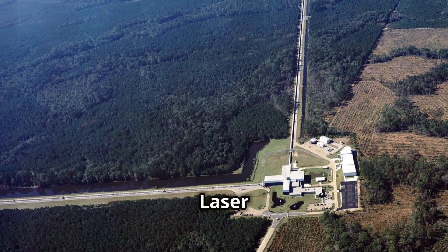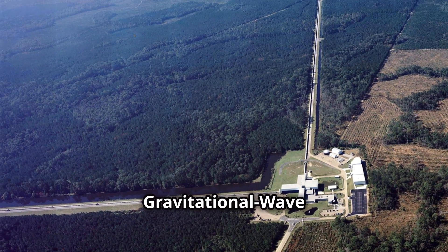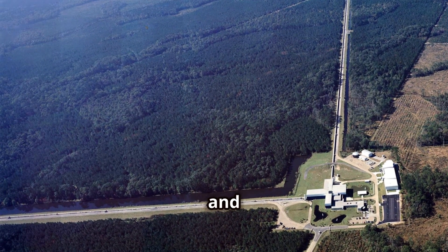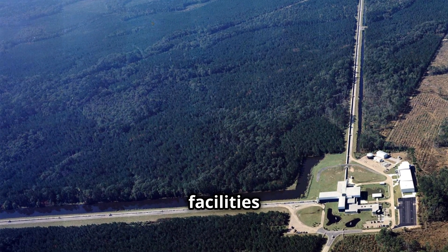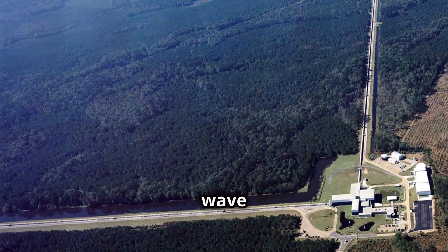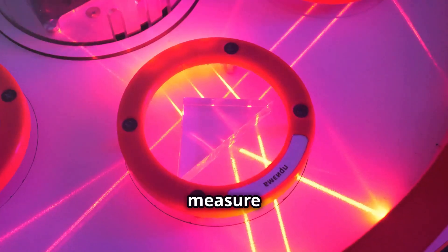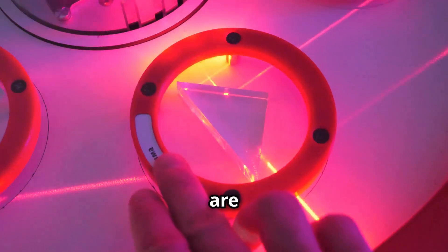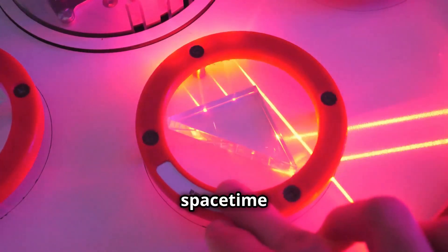The most famous of these detectors are the Laser Interferometer Gravitational Wave Observatory, or LIGO, in the United States and Virgo in Italy. These facilities are at the forefront of gravitational wave research. These detectors use lasers and mirrors to measure the tiny stretches and squeezes in space-time caused by passing gravitational waves, which are ripples in the fabric of space-time itself.